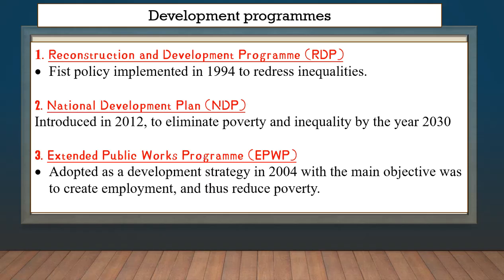When you answer this question, there's no right or wrong answer. Some learners might say yes, the programs like the RDP and the NDP worked — they might cite that some people have RDP houses, more people have water and electricity now than before 1994, and there are child grants to help people so they don't live in poverty. You can cite many reasons why you think the programs worked.